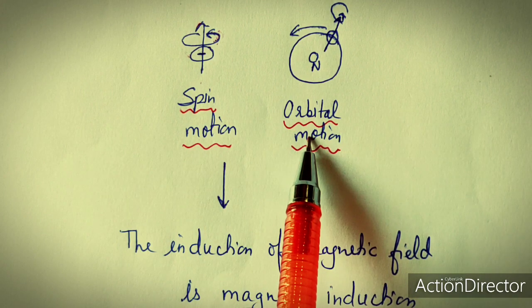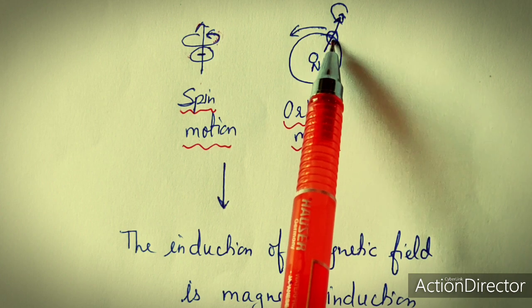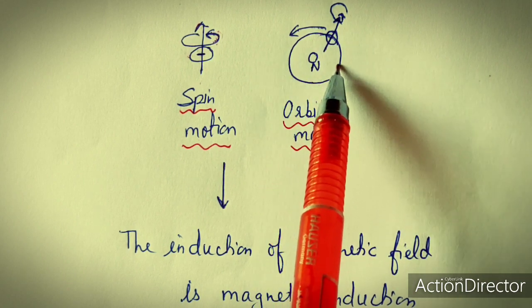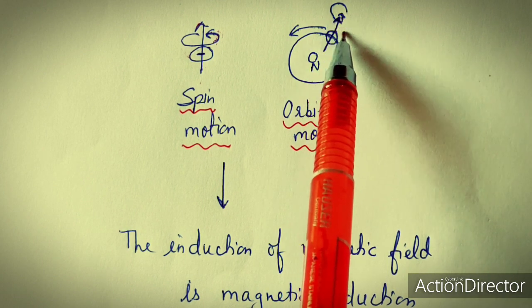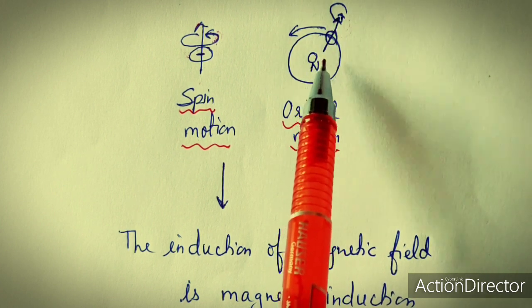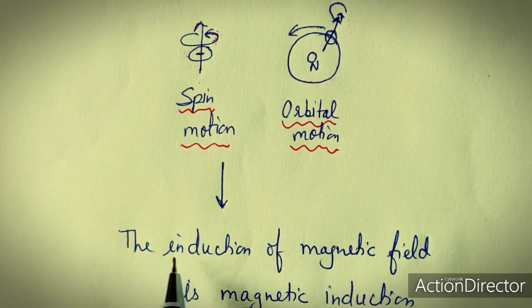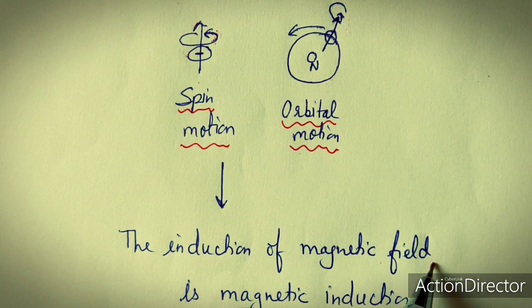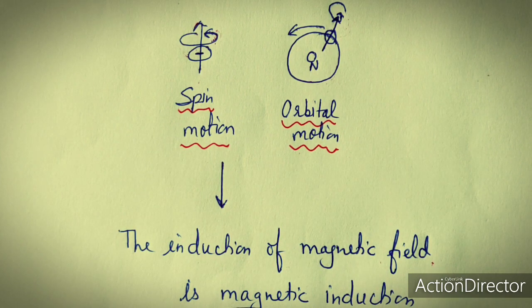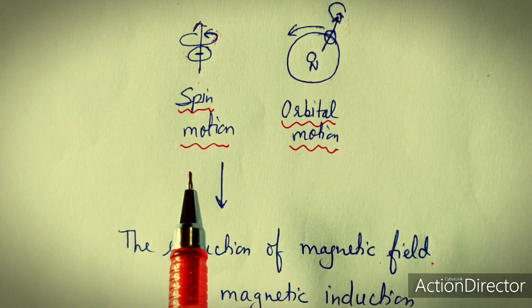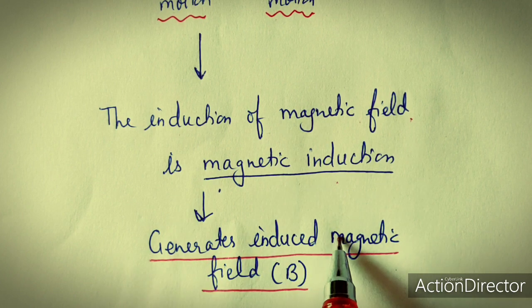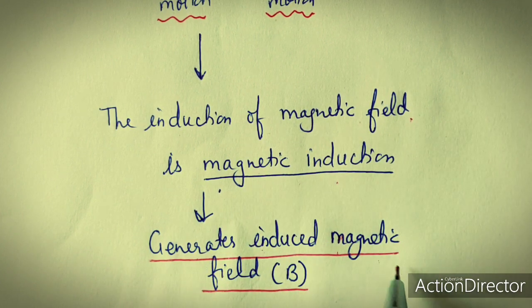Orbital motion of the electron is that the electron is also moving in the orbital. This is the orbital motion of the electron while the motion along its axis is spin motion. Due to this orbital motion and spin motion, induction of a magnetic field occurs when we put these complexes in a magnetic field, and this induction is known as magnetic induction, which generates an induced magnetic field.